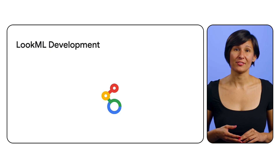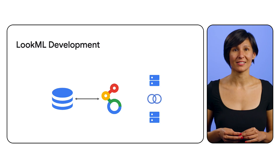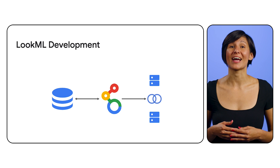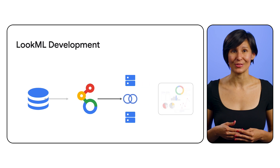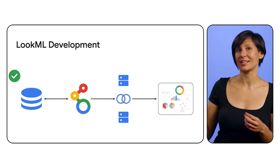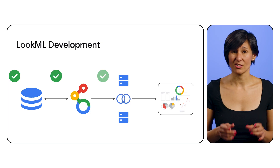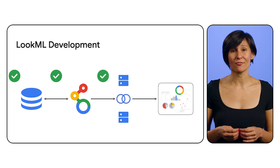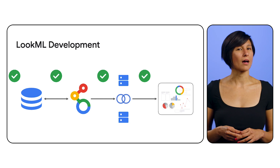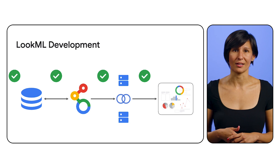LookML development is the craft of shaping raw data into usable governed models. Every stage of this development offers a chance to catch and correct potential issues, from connecting to data, to joining tables, all the way to creating insights with looks and dashboards. Every time you make a pull request, you're trusting that every piece of that complex pipeline will hold up. What if you could stop just trusting the process and start controlling it with Looker continuous integration?